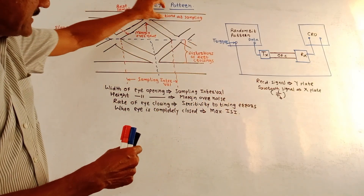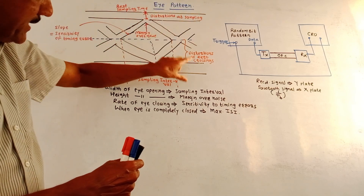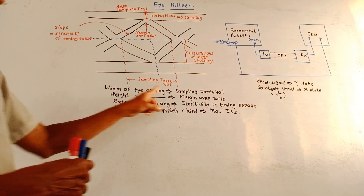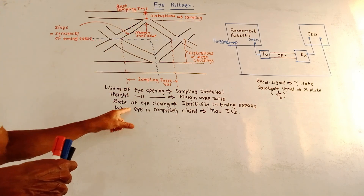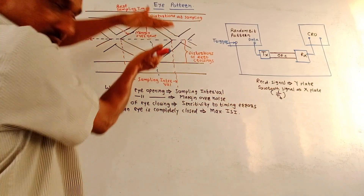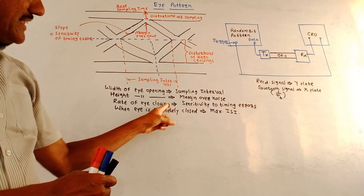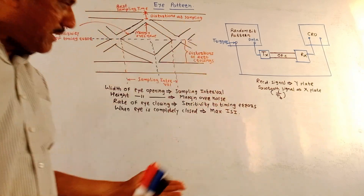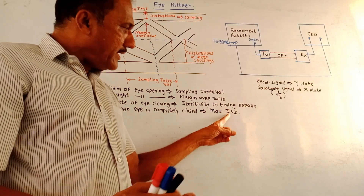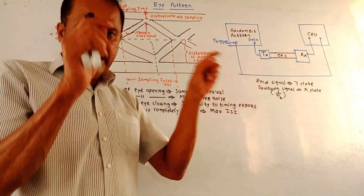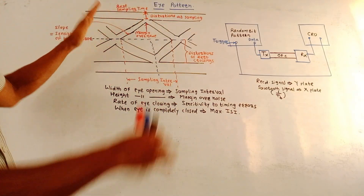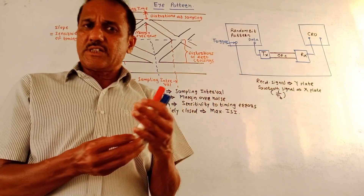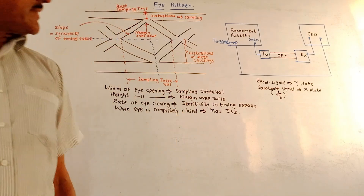The width indicates distortions at sampling, and the particular height indicates distortions of zero crossing. Rate of eye closing — whenever the closing of the eye takes place, the diagram gets compressed — gives the sensitivity to timing errors. When the eye is completely closed, it indicates the maximum effect of inter-symbol interference (ISI). So all these informations can be generated once this eye pattern is displayed on the oscilloscope. That's it for the quick revision session of optical measurement. Thank you for watching this video.